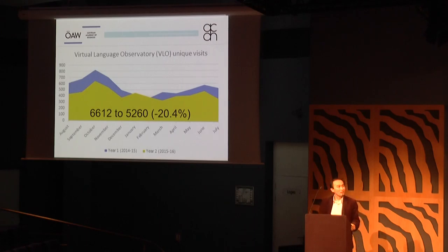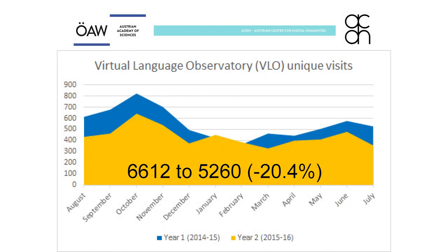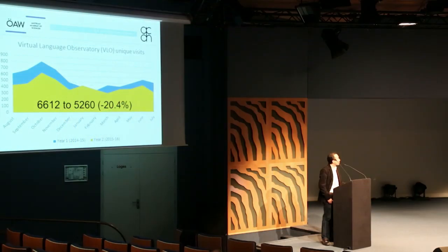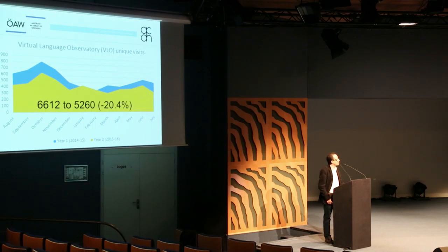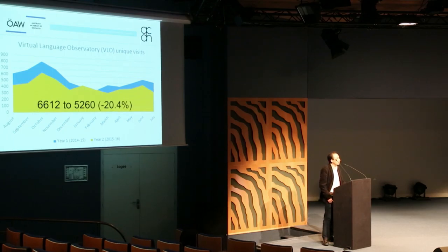We can start from easy numbers. This is basic information about unique visits — the blue one is year one and the yellow one is year two. As you can see, in year two we have 5,260 visits, which is about 14.4 visits per day. Maybe it's not very impressive news. Apparently we are not doing very well right now because we have a 20% decline of web traffic. But I'm not here to embarrass somebody in this room, but to help the situation.